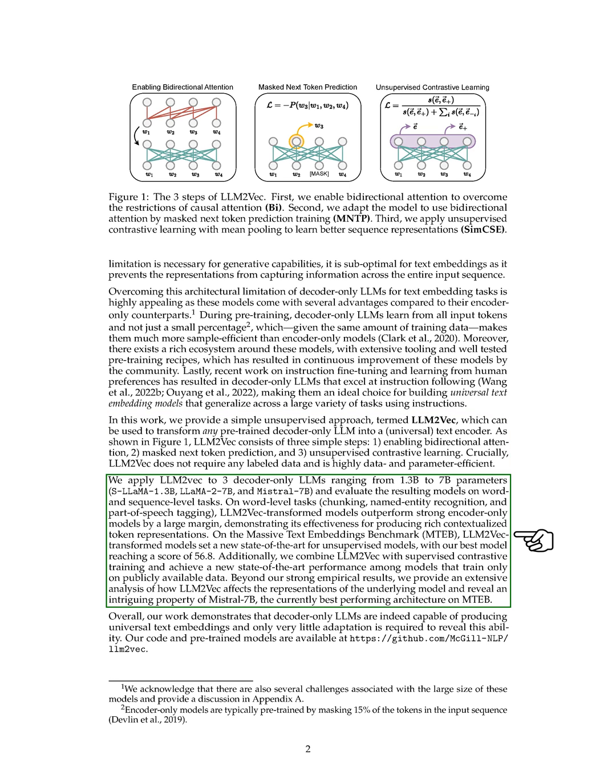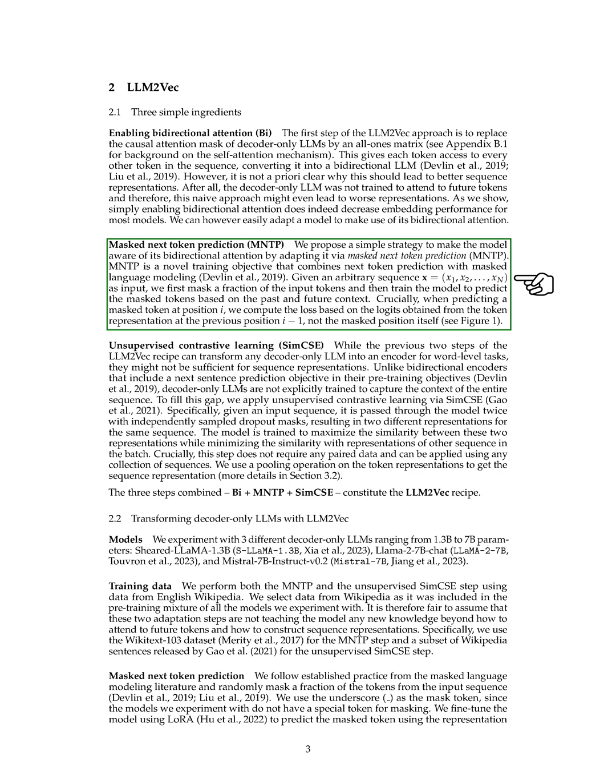We tested LLM2-VEC on different decoder-only models and found that it outperformed strong encoder-only models in tasks like chunking, named entity recognition, and part-of-speech tagging. By combining LLM2-VEC with supervised contrastive training, we achieved state-of-the-art performance among models trained only on publicly available data. Our analysis also revealed interesting insights into how LLM2-VEC affects model representations. Overall, our work shows that decoder-only models can indeed create universal text embeddings with minimal adjustments.